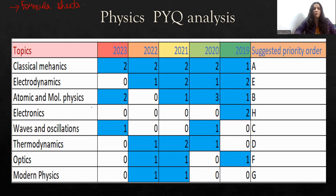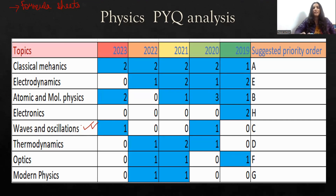From waves and oscillation, again the de Broglie equation and the spring constant formulas — learn all those formulas very carefully. From thermodynamics, learn isothermal, adiabatic, and all those basic processes.